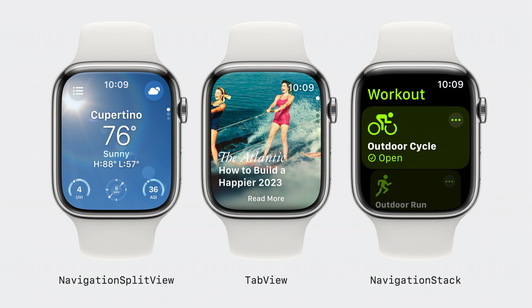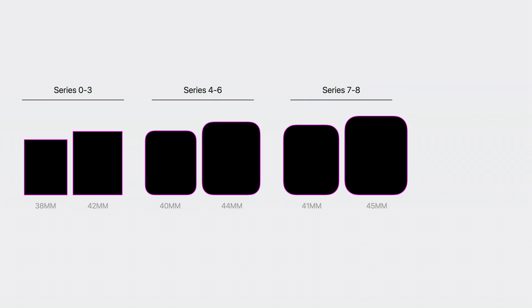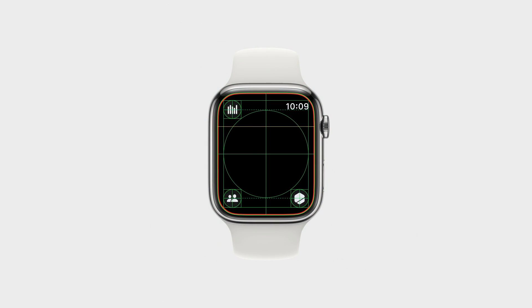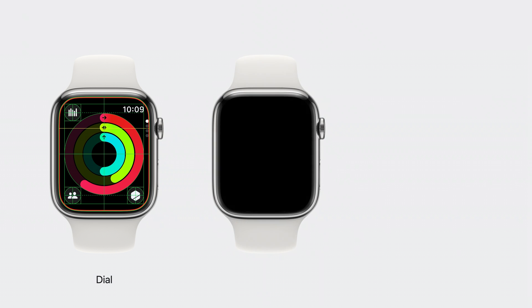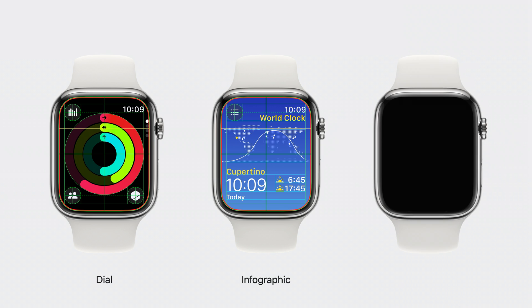So that's navigation on watchOS 10. Now that you've chosen the best navigation structure for your app, let's talk about the resources you can use to build each view. As the Apple Watch display and hardware have evolved, the display has gotten consistently larger and more rounded. While designing for an increasingly rounded display over the years, we've developed a flexible grid system that defines the size and placement of controls, labels, and content. To accommodate different types of content, we designed three foundational layouts: dial-based views, infographic views, and lists.